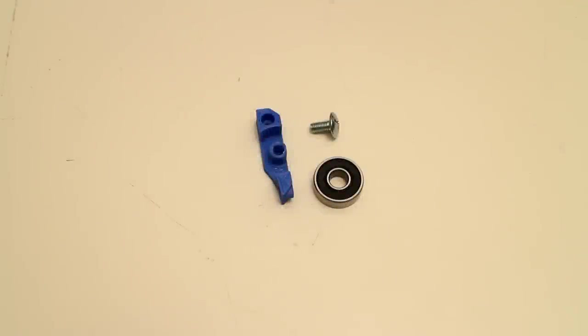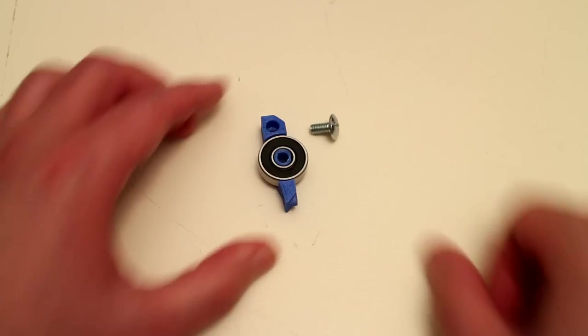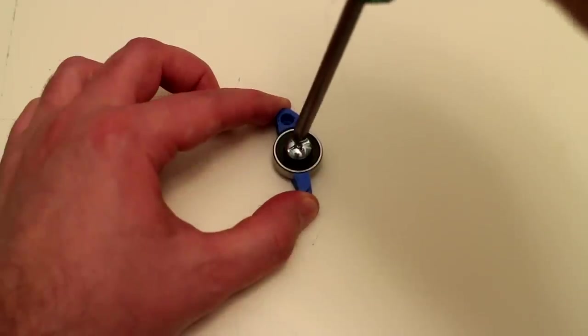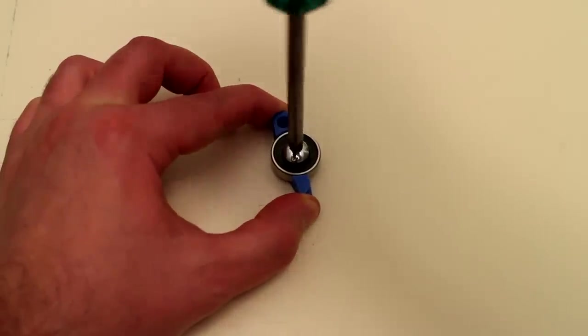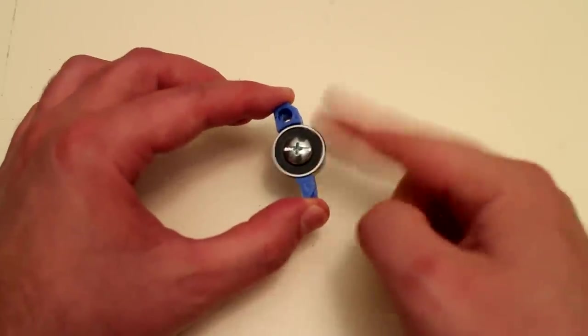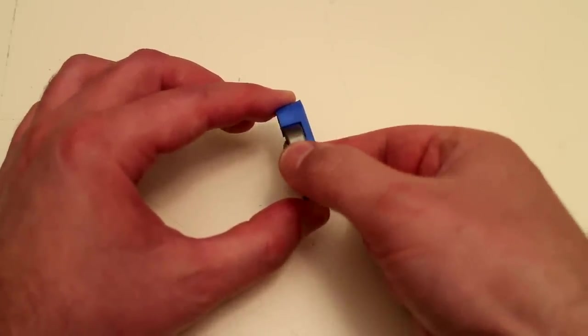We'll start with the Bowden idler. Simply pop in the bearing, insert the M5 screw, thread down the screw until it stops. Bearing spins nice and freely and is well secured.